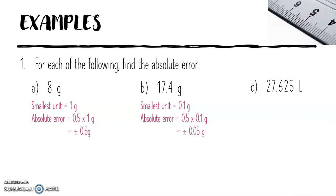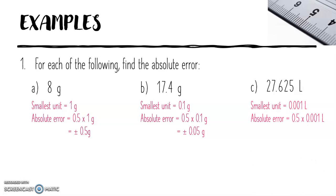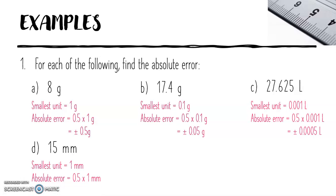C: 27.625 litres. The smallest unit is 0.001 litre. The absolute error is 0.5 times 0.001 litre, which equals plus or minus 0.0005 litres. D: 15 millimetres. The smallest unit is 1 millimetre. The absolute error equals 0.5 times 1 millimetre, which equals plus or minus 0.5 millimetres.